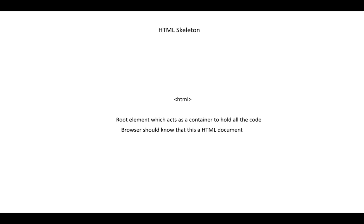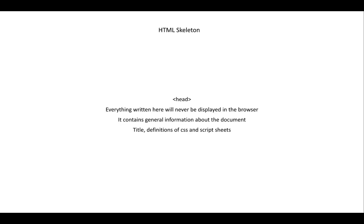The next item is the head tag. The head tag contains information about the document you're trying to create. At later parts of your training you'll understand the importance of these items — viewport, meta and all of this. Your IDE creates all of this automatically for you when you type 'html' and select '5', so you don't need to memorize all of these items.